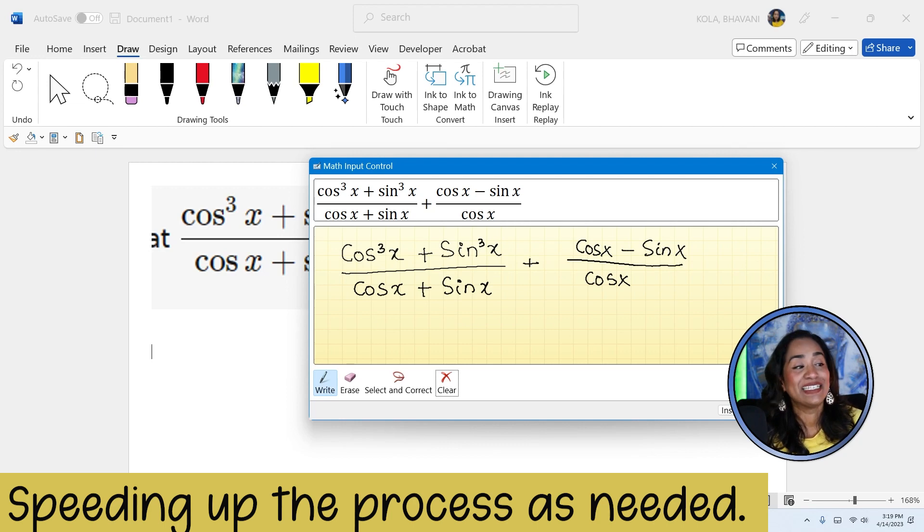So the AI feature is detecting what I am writing and it's automatically changing into the math equations. Now let me go ahead and put in the cube here. Cube on the top. And as you can see, that's not what I want it to be. So I'm going to go ahead, take my eraser tool, erase the whole thing.